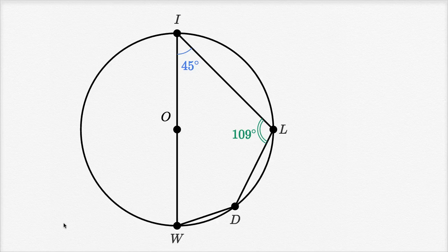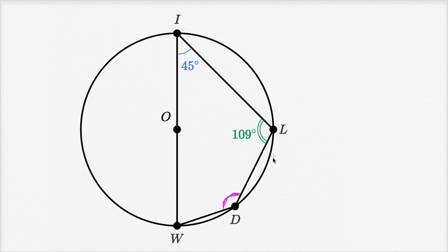What I want to do in this video is see if we can find the measure of angle D. Like always, pause this video and see if you can figure it out. I'll give you a little bit of a hint — it'll involve thinking about how an inscribed angle relates to the measure of the arc that it intercepts. All right, so let's work on this a little bit.